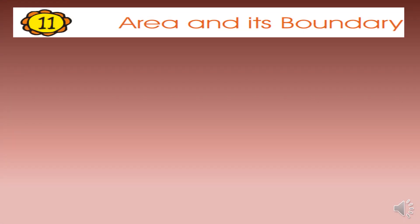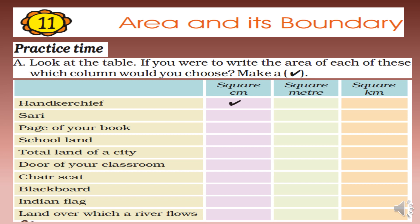Hello everyone, welcome to my YouTube channel. Today we will start with Chapter 11, Area and its Boundary, Session 2 - Practice Time. Look at the table: if you were to write the area of each of these, which column would you choose? Make a tick mark. Three options are given: square centimeters, square meters, and square kilometers.